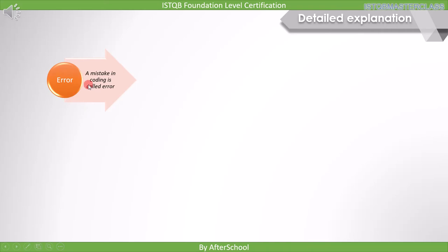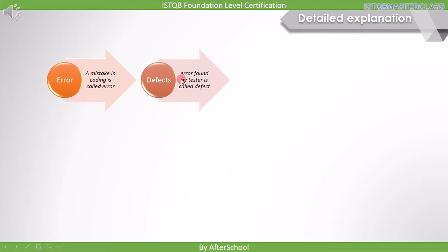What is error? A mistake in coding is called an error. If a human makes a mistake in writing code, then we call it an error, and this is the first stage. The next is defect — error found by a tester is called a defect. After that comes bug. When this defect is accepted by the development team, then it is called a bug.